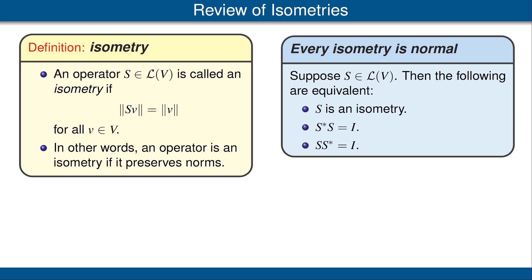Let's consider a consequence of this result. Suppose S is an isometry. Then, by conditions 2 and 3, we see that S star S is equal to S S star, because both are equal to the identity operator. Thus, S commutes with its adjoint, which means that S is normal. In summary, we have shown that every isometry is a normal operator.